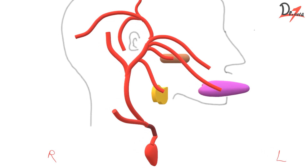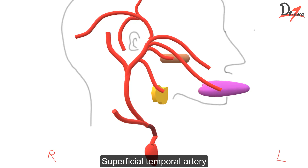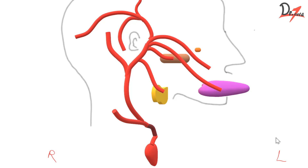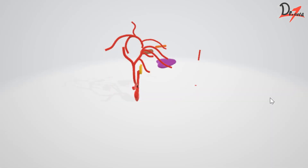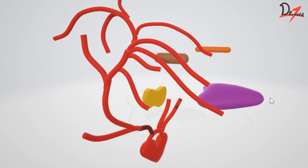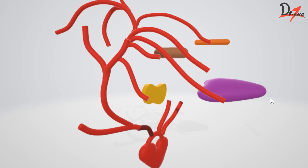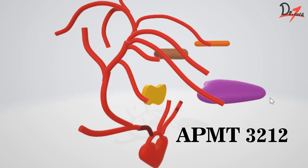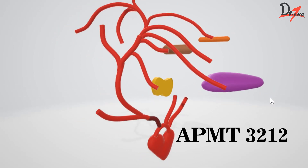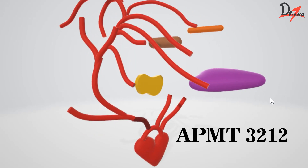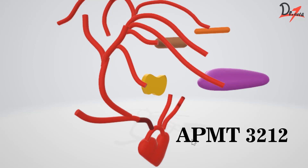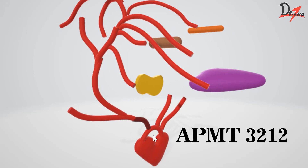And we have one more artery called the superficial temporal artery. Now let us draw the maxilla. We have this artery called the maxillary artery. So these are the terminal branches. Now let us revise all the branches. The mnemonic I have for you is APMT3212 — Anterior, Posterior, Medial, and Terminal — and 3212 refers to the number of branches or number of arteries there.